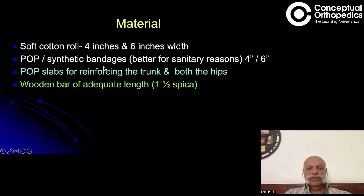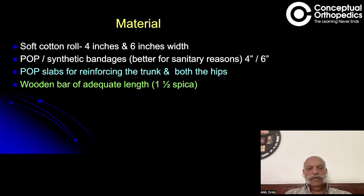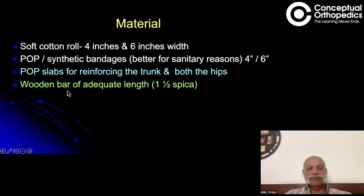These bandages can also be used to create plaster of Paris slabs for reinforcing predominantly two areas: the proximal trunk and the hip joint — the single hip joint if giving a single hip spica, or both hips if required. A wooden bar is needed which is then encased in plaster of Paris. A wooden bar of adequate length is required in all cases of one-and-a-half hip spica.